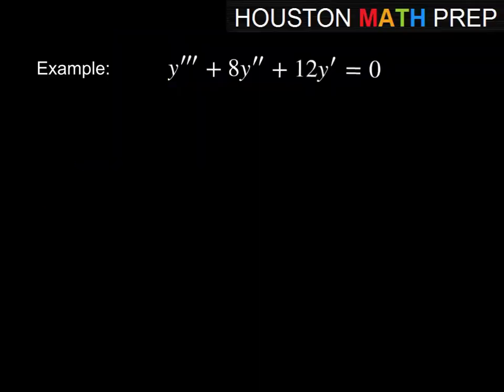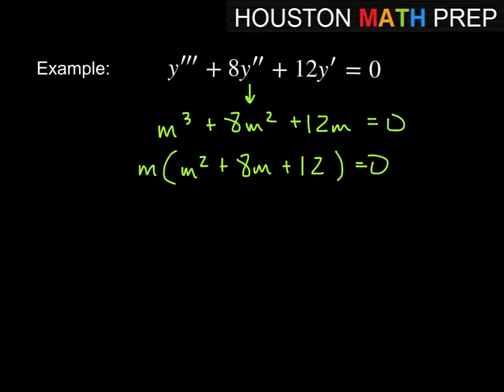Looking at the next one here, y triple prime plus 8y double prime plus 12y prime equals 0. So we want to notice that the y term is missing. In other words, what will be the constant term in our auxiliary equation will be 0. So this is m cubed plus 8m square plus 12m is equal 0. And then we can factor an m out certainly, so that'll give us m times the quantity m square plus 8m plus 12 equal to 0.